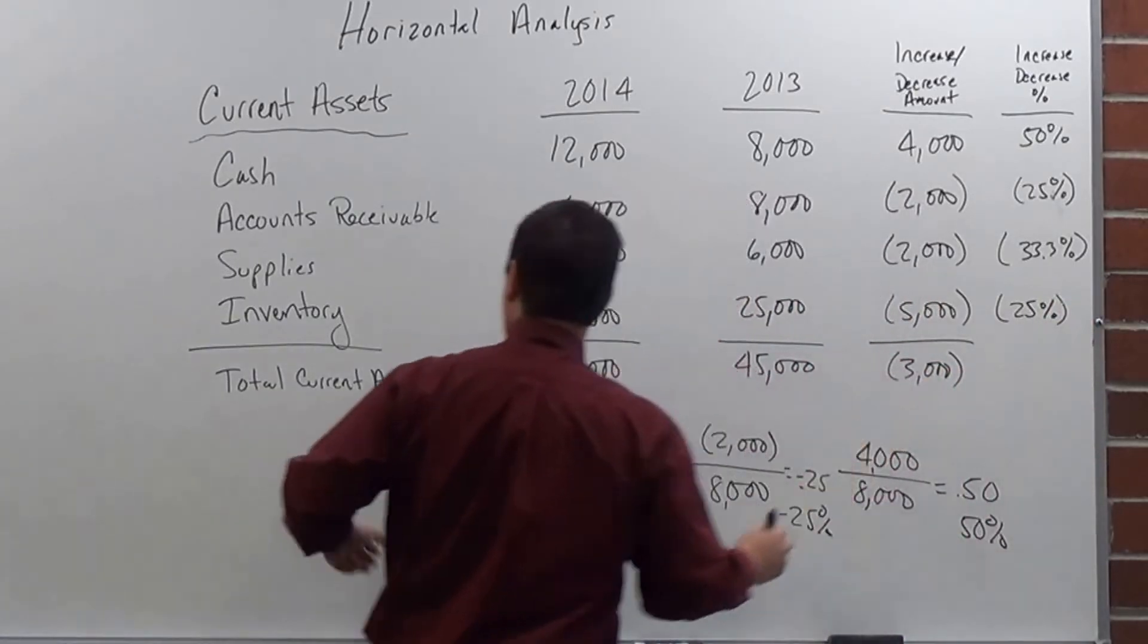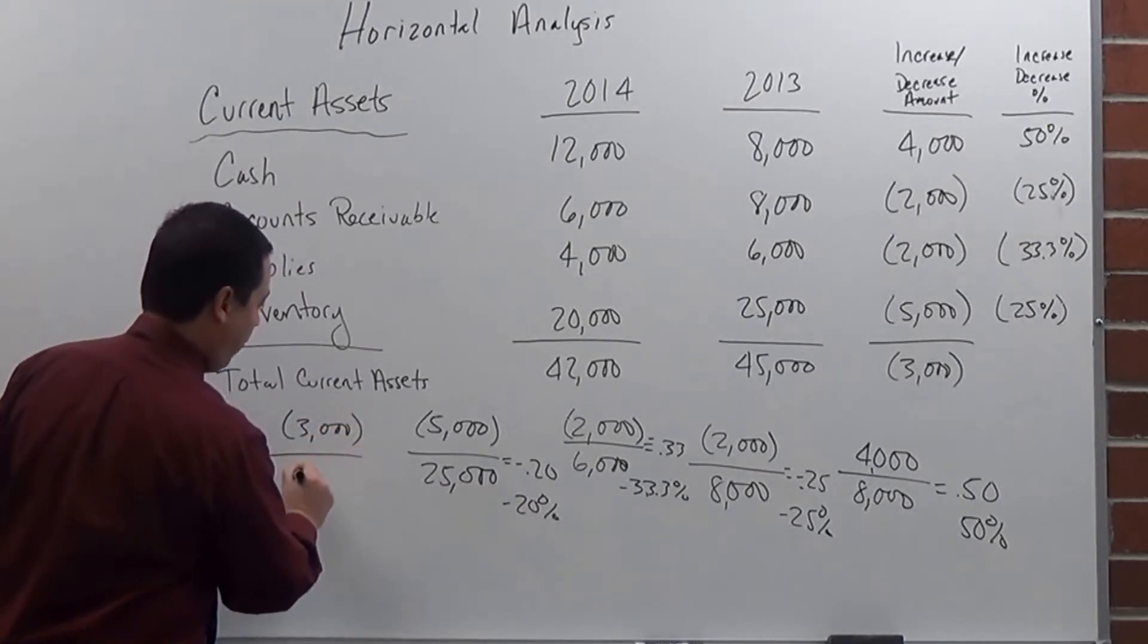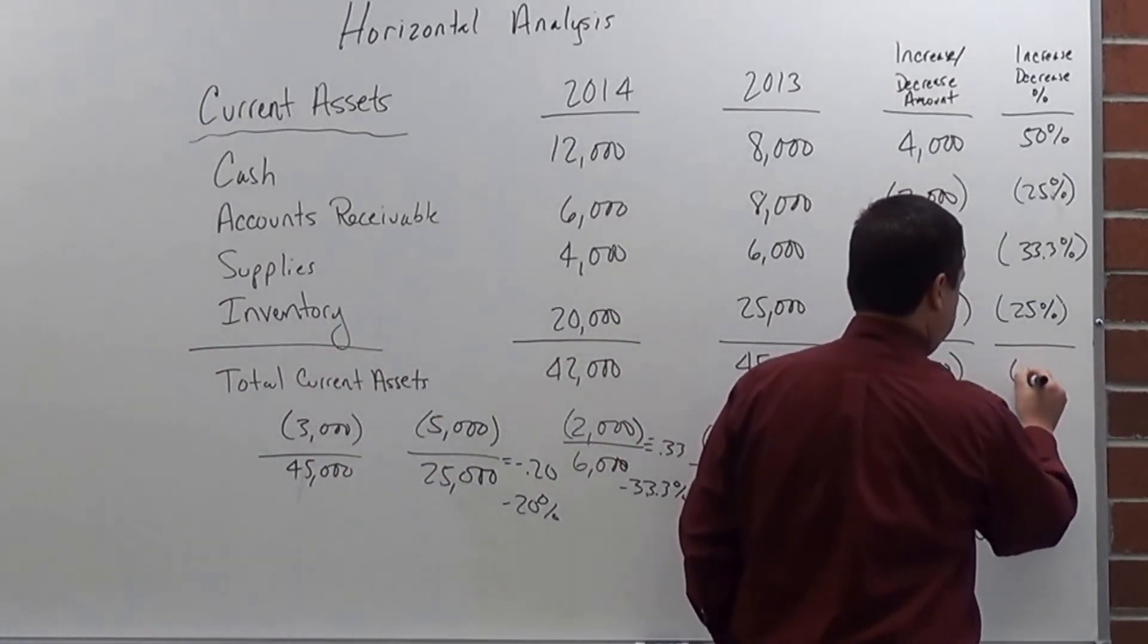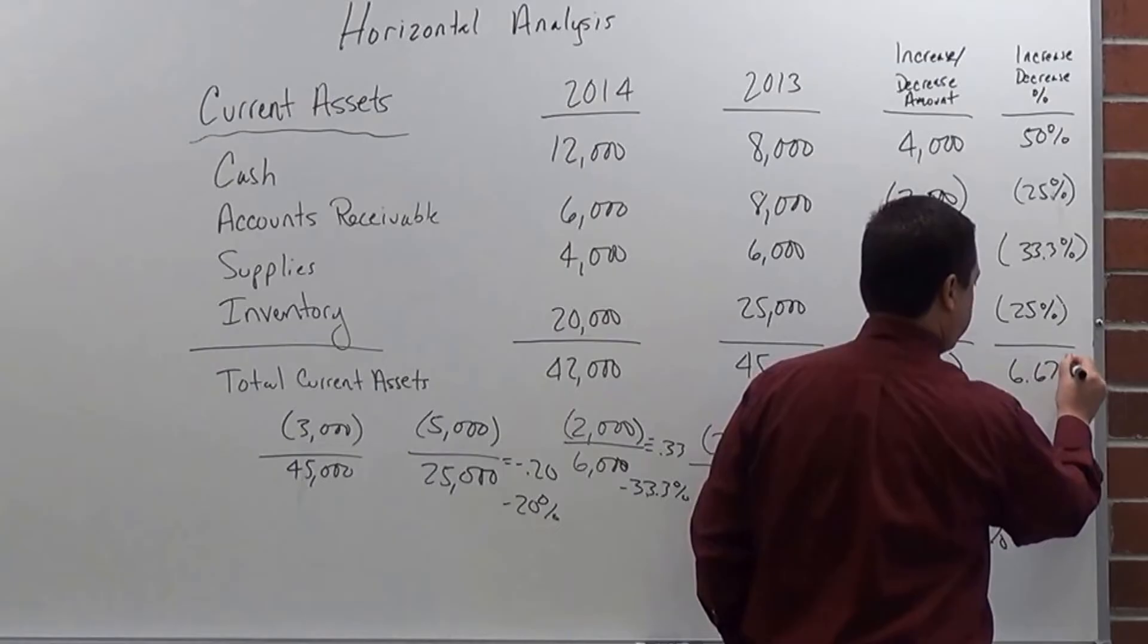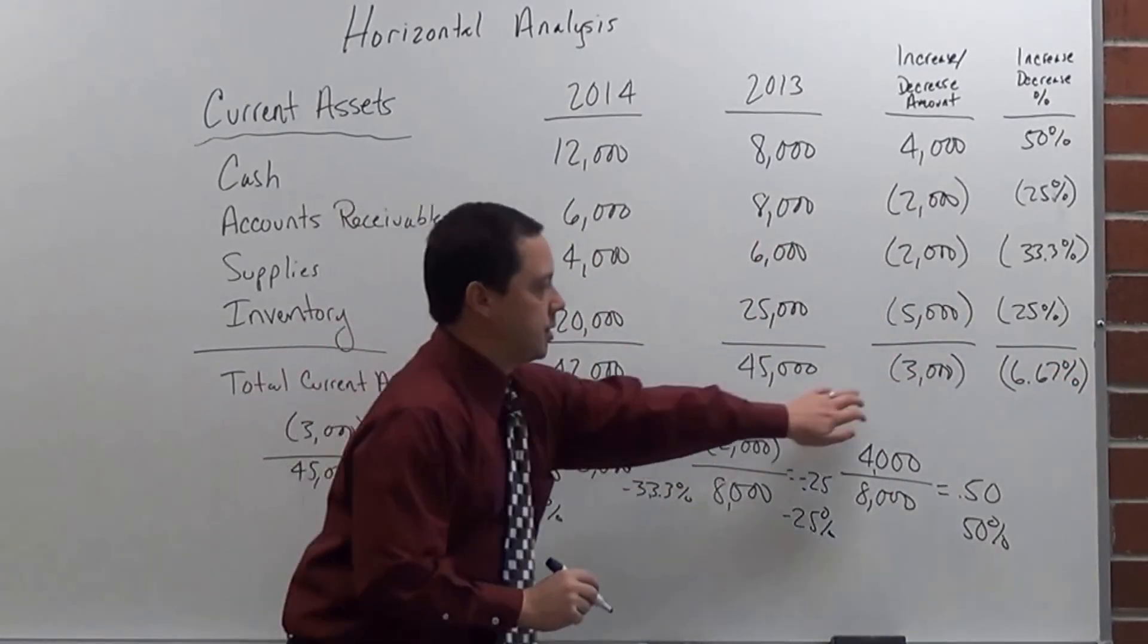All right, and the final thing we'll do is the total current assets, which is my $3,000, negative $3,000 over the $45,000. Now, if I put that in the calculator, I will have it, it will come out to be 6.67%, and that would be a negative because this was a negative here.